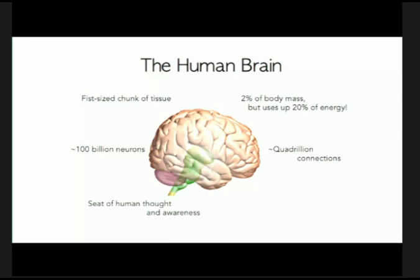The brain is thought to be the seat of human thought and awareness — everything we think and imagine seems to emerge from the brain. Despite several decades of research, we have no idea how it works. Historically neuroscience research has been led by biologists, electrophysiologists — people who knew how to record or look at the structure of the brain.